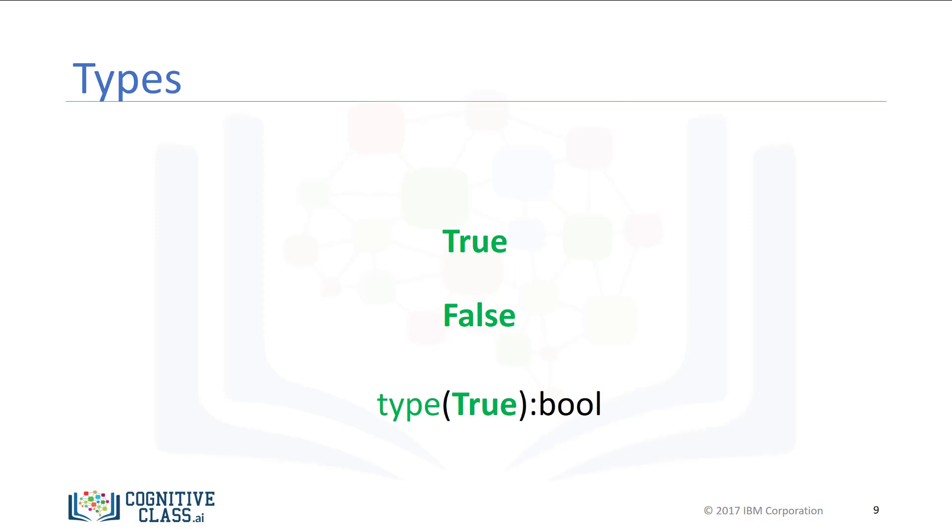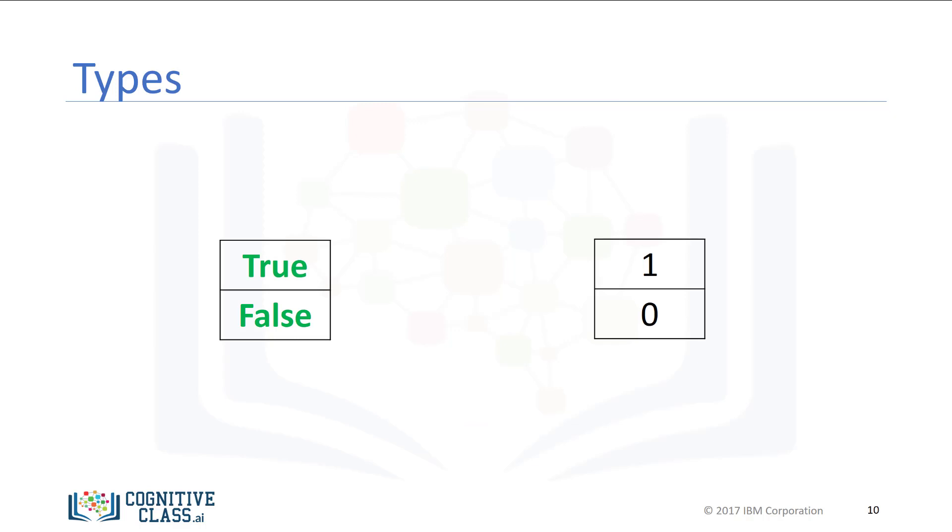If we cast a Boolean true to an integer or float, we will get a 1. If we cast a Boolean false to an integer or float, we get a 0. If you cast a 1 to a Boolean, you get a true. Similarly, if you cast a 0 to a Boolean, you get a false.